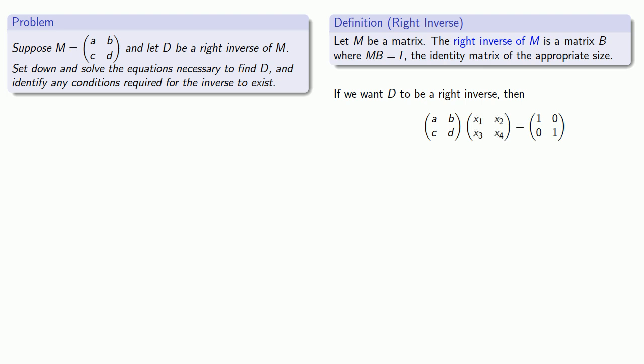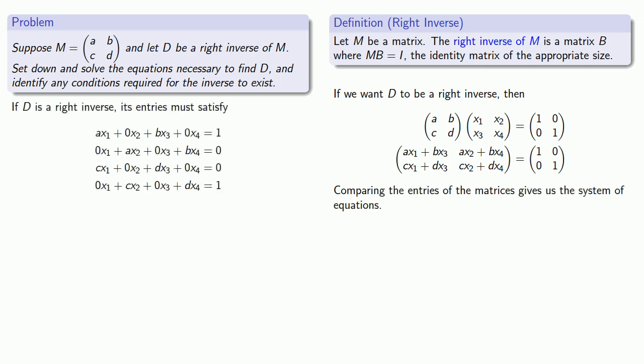Now since we do know how to multiply two matrices, we'll multiply row by column to get each of the entries in the product. And if we compare the entries of the two matrices, we will get a system of equations. So if D is a right inverse, then its entries must satisfy a system of equations.